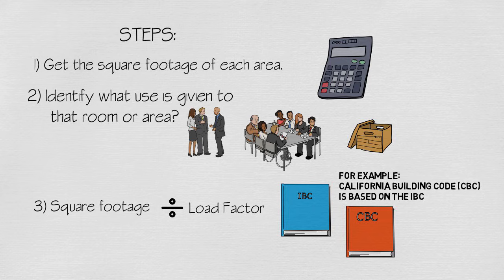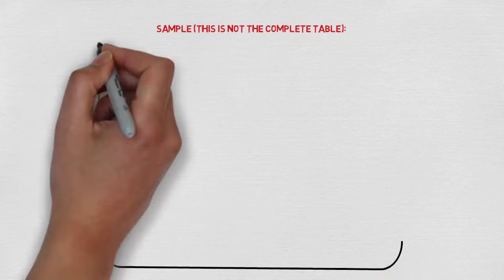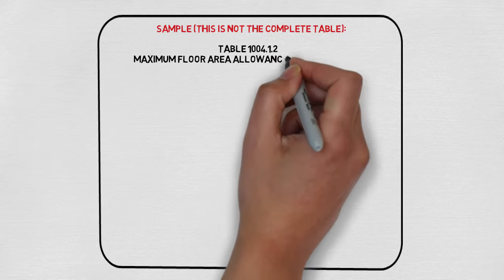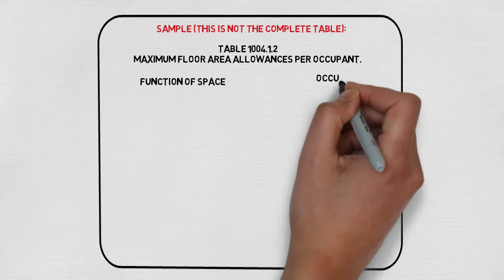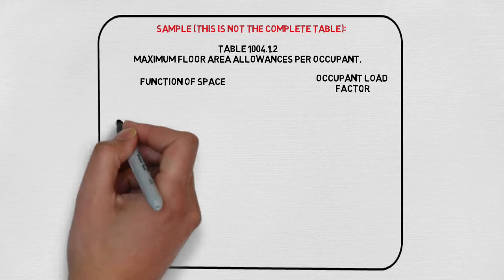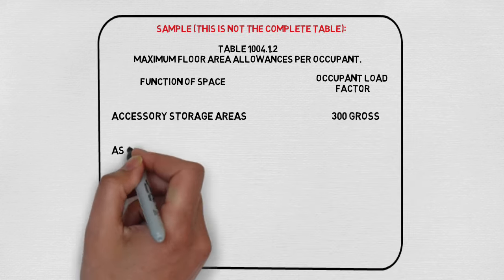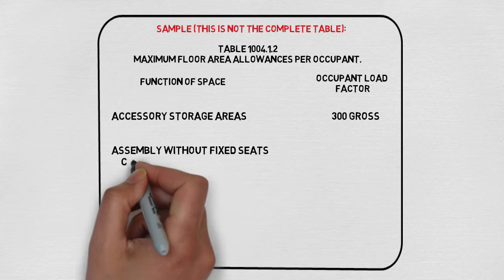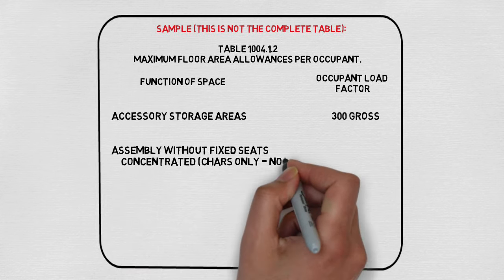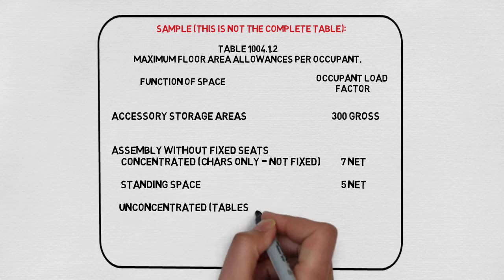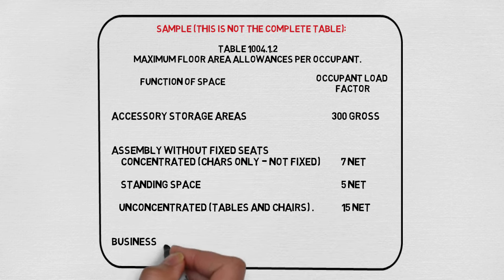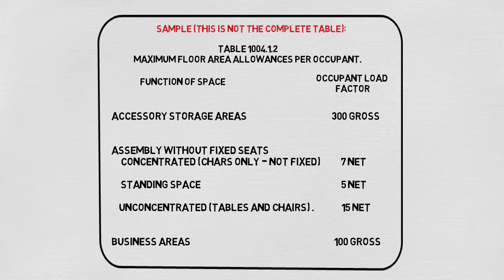So with that in mind you can find the table with the load factors that are required in IBC chapter 10 table 1004.1.2. As you look at this table you will notice that not all room descriptions will be found. So in some instances you're going to have to make a reasonable selection based on the closest matching description. It looks a lot more complicated than it is but most occupancies are easy to understand.